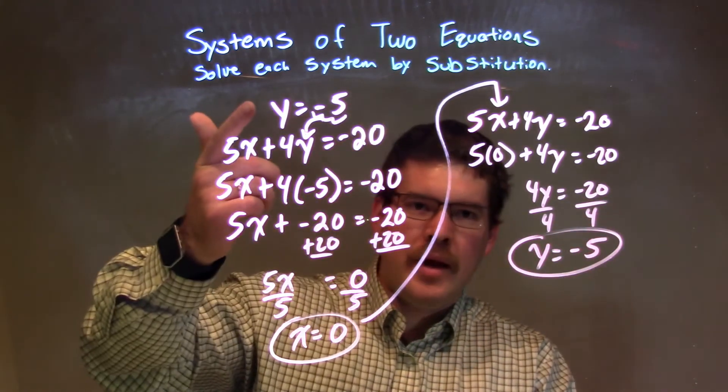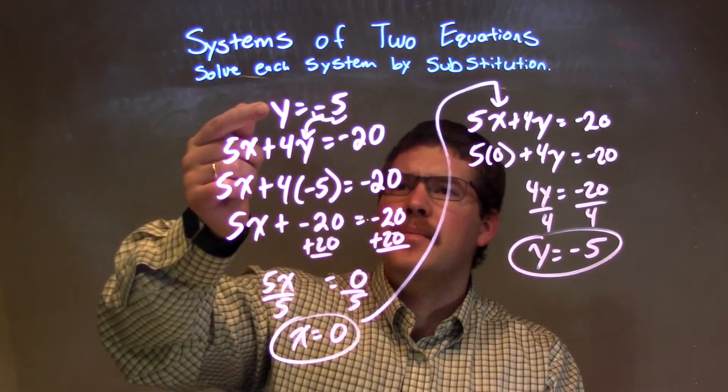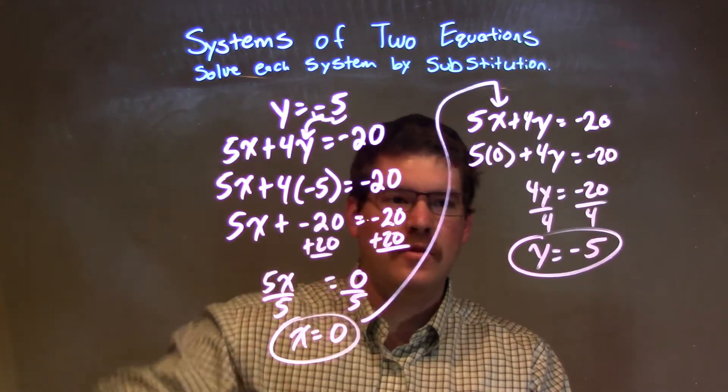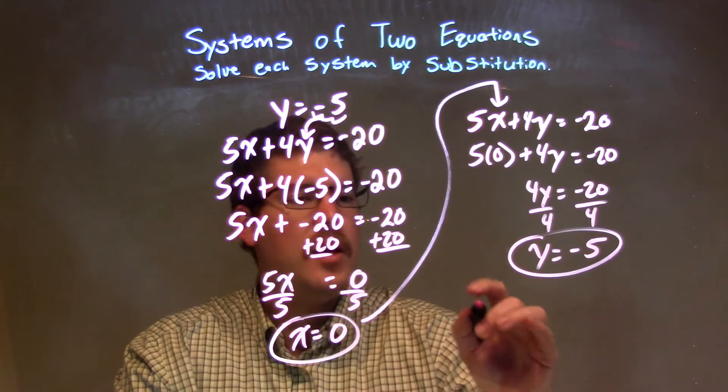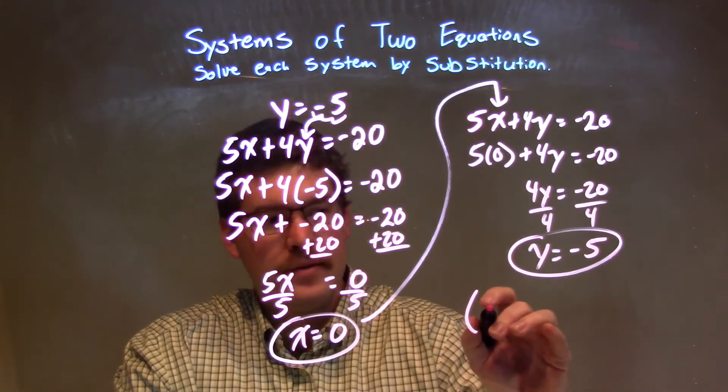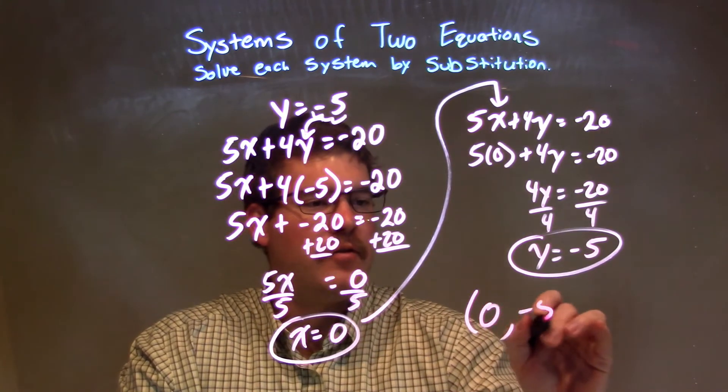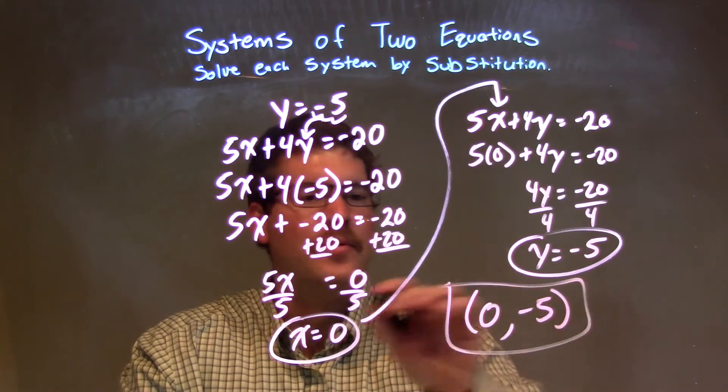So, we could have just used the first equation from the beginning, like I said. But, it's all good if you need to substitute it back in to be double sure. So, we can write this as a coordinate point, 0 comma negative 5, and that would be our final answer.